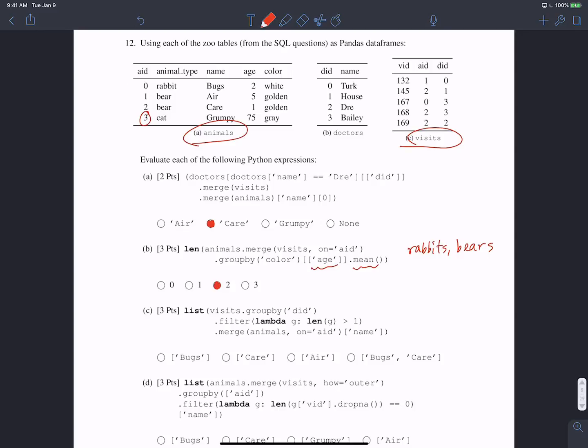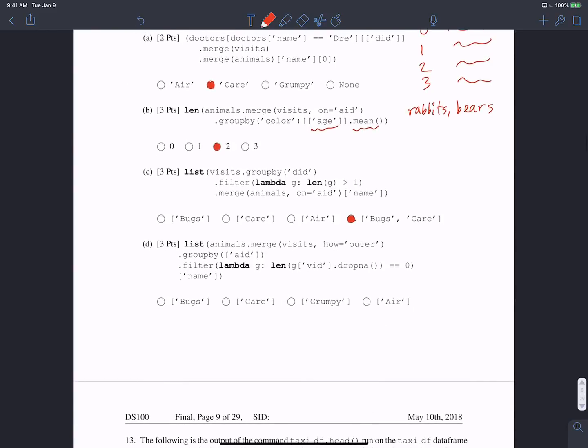Now we're looking at grouping the visits table by doctor ID. We'll have zero then something, one then something, two then something, three then something, filtering out only the doctors who saw more than one patient. There was only one doctor that saw more than one patient, which was Dr. Bailey with ID 3. We're merging that with animals on the animal ID column and we want the names of those animals. So what we want is the name of animal zero and animal two, which are the only animals that were seen by doctors who saw more than one patient. Animals zero and two are bugs and care, so our result is a list of bugs and care.